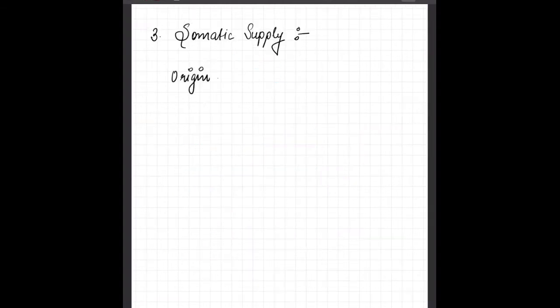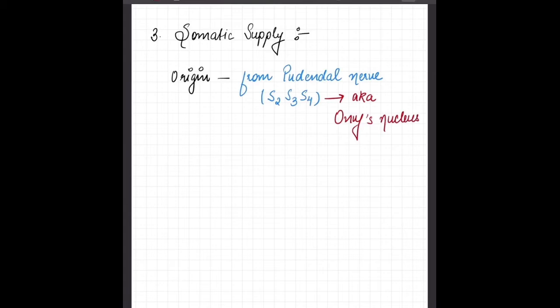Now, we will see the somatic supply of micturition. It originates from the pudendal nerve and its root value is S2, S3, and S4. This is also known as Onuf's nucleus. The function of somatic supply is that it helps in the voluntary control of the micturition. That is, you can withhold your micturition up to a certain time or up to a certain limit when the urinary bladder is full.